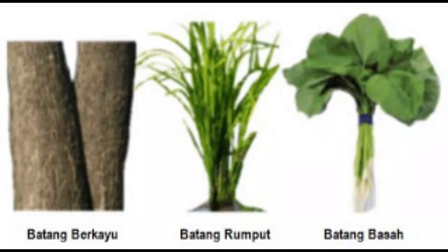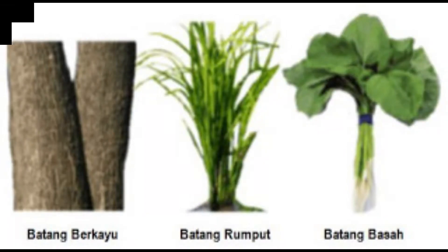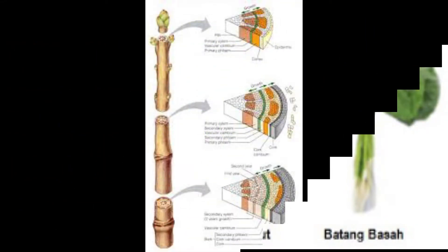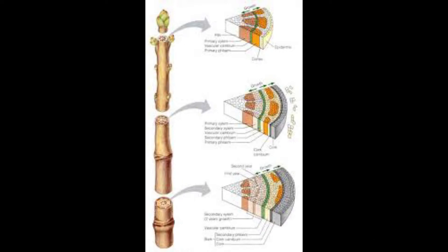Number 4: Stem. The plant stem has the function of delivering water and nutrition from the roots to all parts of the plant.